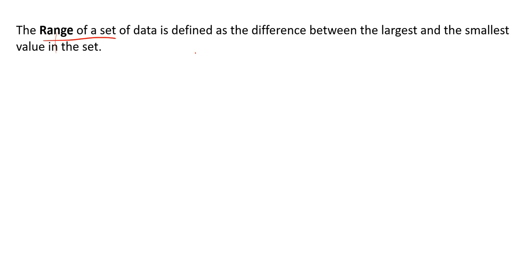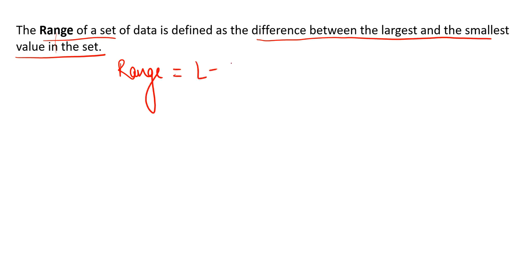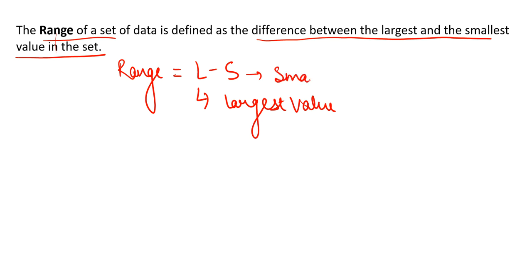The range of a set of data is defined as the difference between the largest and the smallest value in the set. Range is equal to L minus S, where L represents the largest value and S represents the smallest value. So range is basically the largest value minus the smallest value.